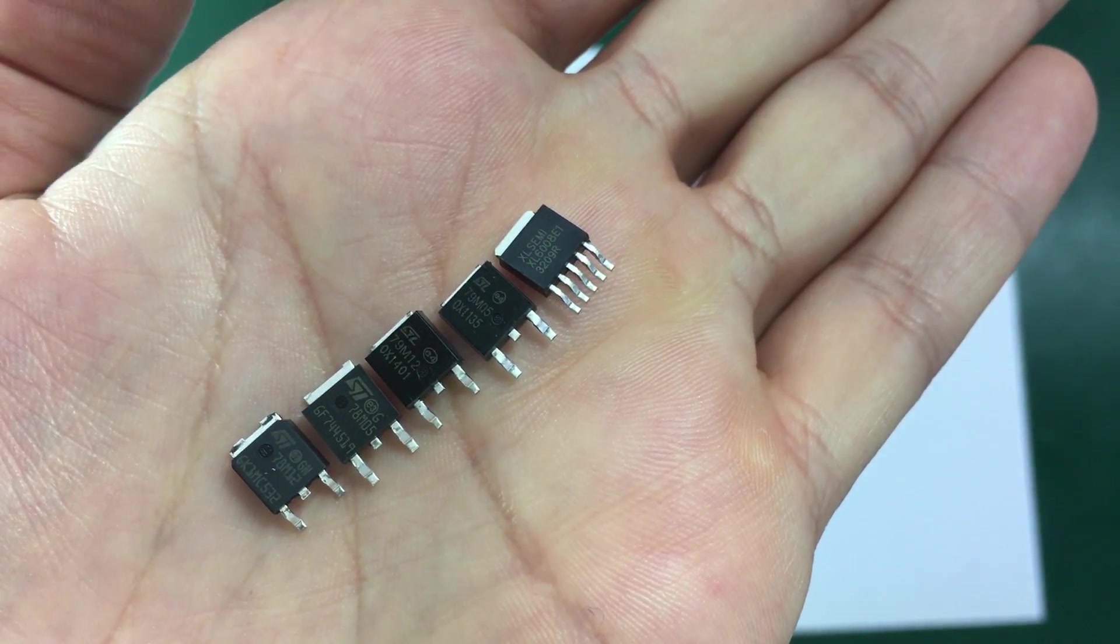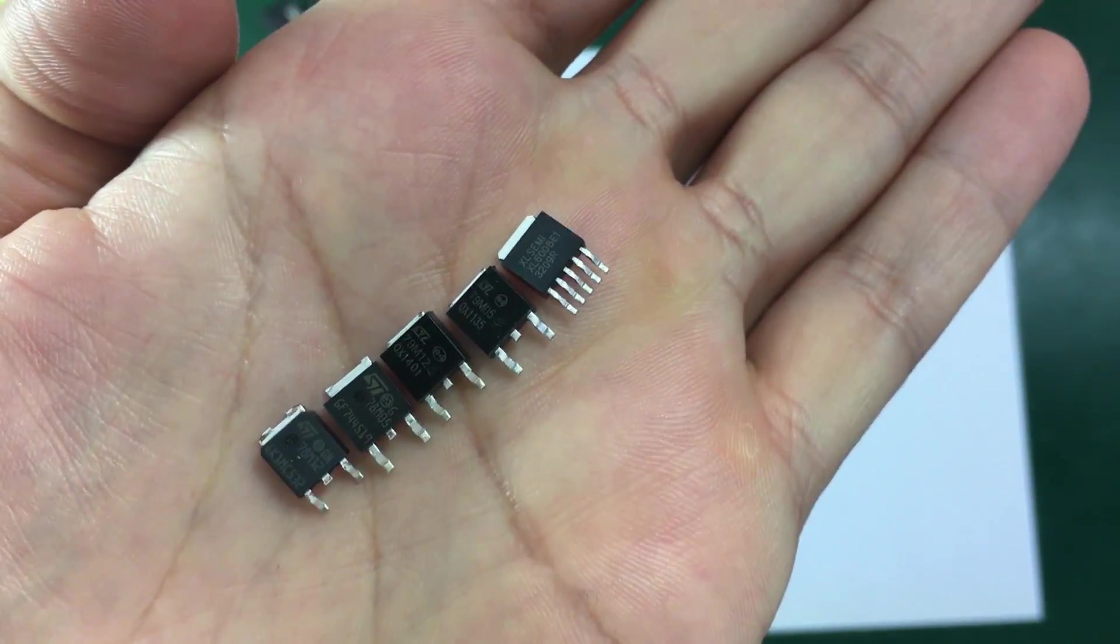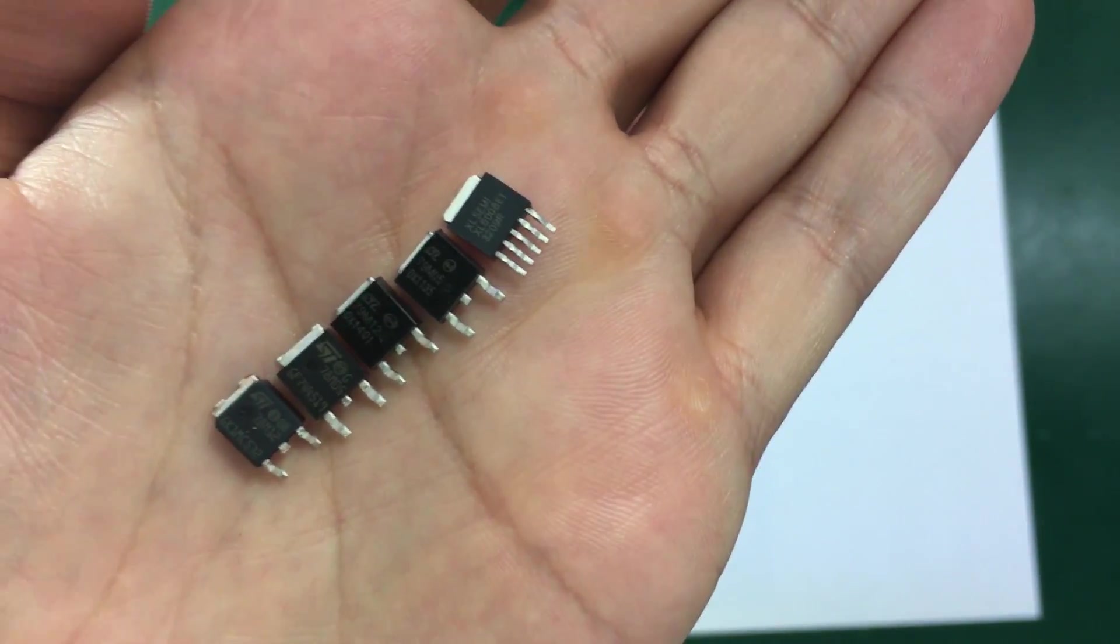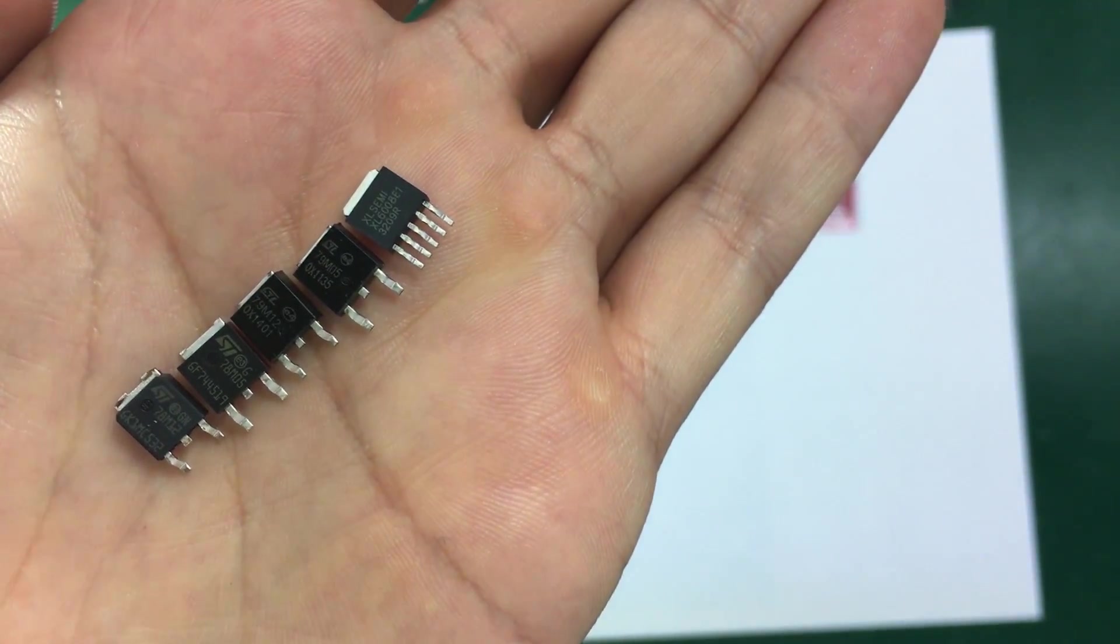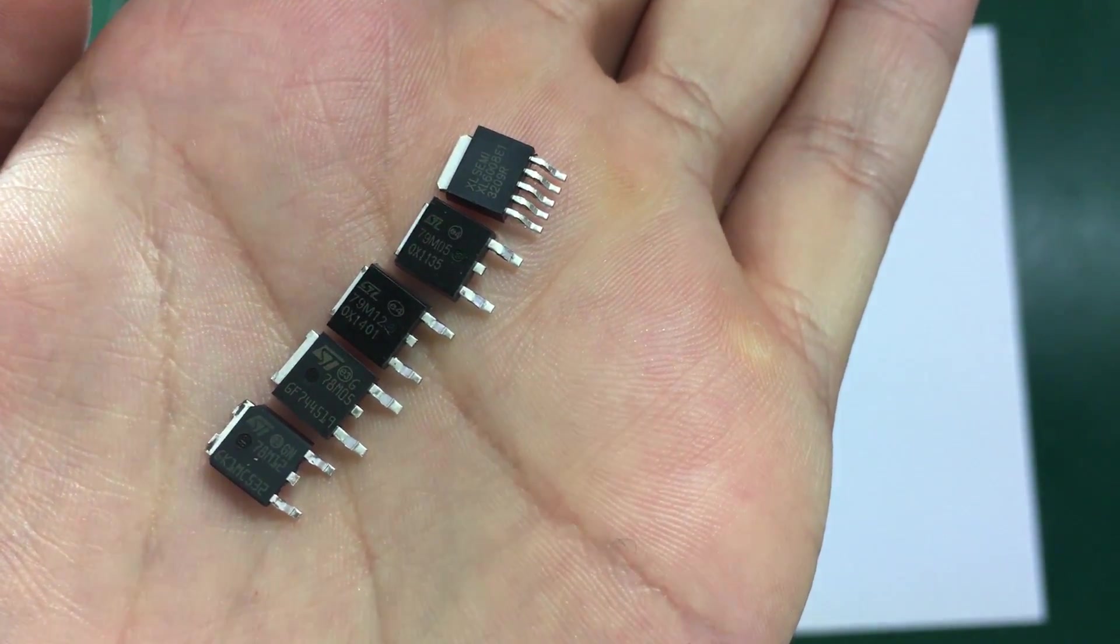So let's get started. Because this kit has SMD components, I recommend you start assembling with these surface mount parts because it will be easier to get them soldered when there's no other components around to interfere with soldering.